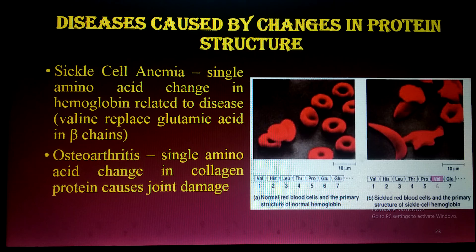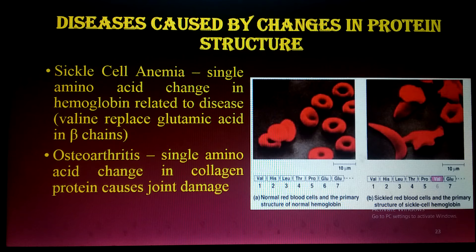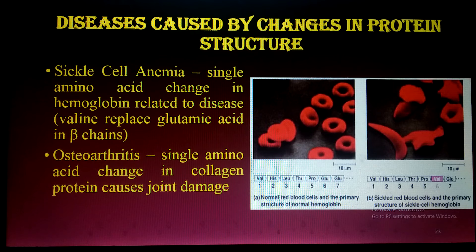Diseases can be caused by changes in proteins. In sickle cell anemia, a single amino acid change in the beta chain of hemoglobin occurs — valine is replaced by glutamic acid — altering the structure of hemoglobin. In osteoarthritis, a single amino acid change in collagen protein causes joint damage.